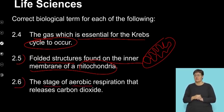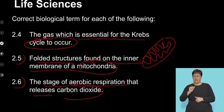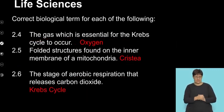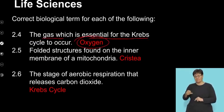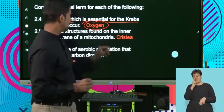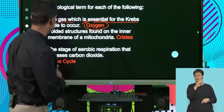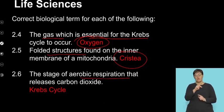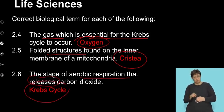Let's see what your answers were. So as I mentioned, the gas which is essential for the Krebs cycle is oxygen. And we know that oxygen is a requirement, and that is the only reaction that requires it. It's the first reaction of the Krebs cycle. The folded structures on the inner membrane of the mitochondria are called the cristae. And finally, the stage of anaerobic respiration that releases carbon dioxide is the Krebs cycle.